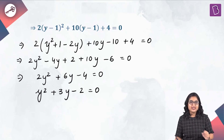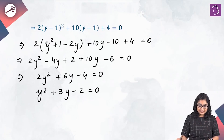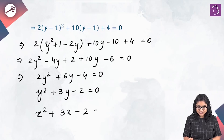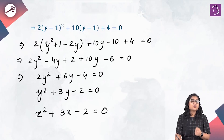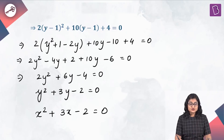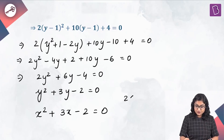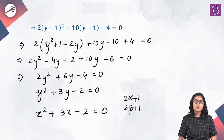Replace y with x. When we replace y with x, we will get x squared plus 3x minus 2 equal to 0, and that is the required quadratic equation whose roots are of the form 2 alpha plus 1 and 2 beta plus 1.